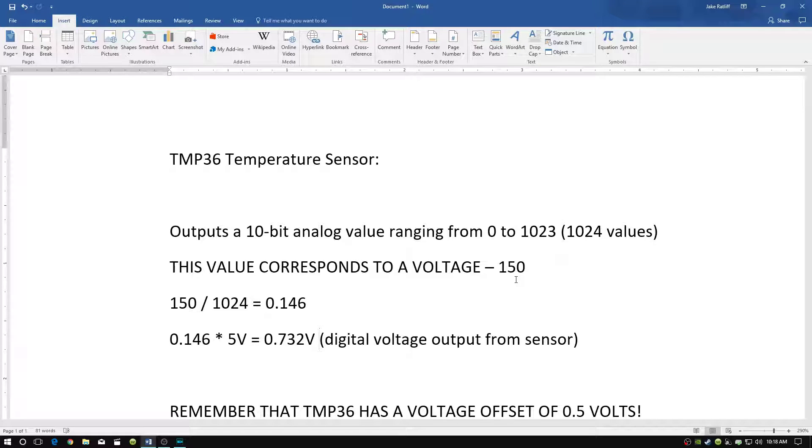So what we're going to do is take that number 150, divide it by 1024, and it's going to give us a number between 0 and 1. And this is basically a ratio, and we can use that ratio to convert into a voltage. So let's say for instance we're using a 5-volt Arduino board. We're going to take this ratio, which in this case is 0.146, and multiply it by 5 volts.